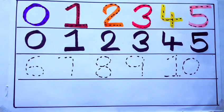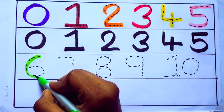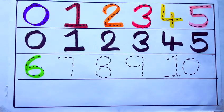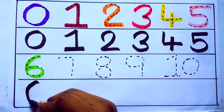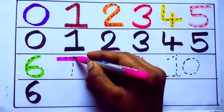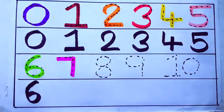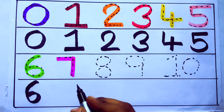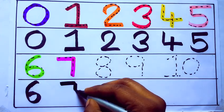Green color: 6, s-i-x, six. Number 6. Pink color: 7, s-e-v-e-n, seven. Number 7.